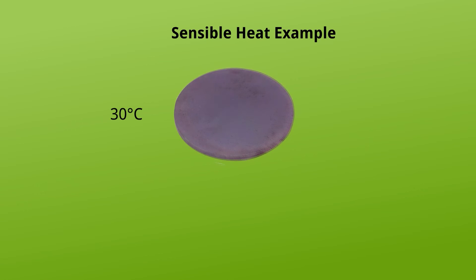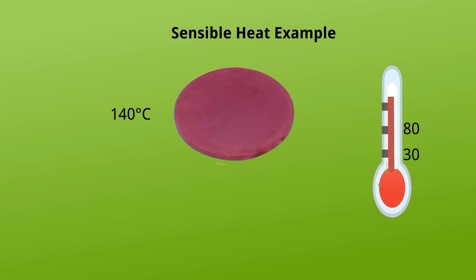Sensible heat example: take a plate of iron at normal temperature, like 30 degrees centigrade. If we heat it, its temperature will increase — say to 80 degrees centigrade — and it can be sensed. If the temperature increases more to 120 or 140 degrees centigrade, it can still be sensed. So when we heat the iron plate, its temperature is increasing, there is no change of phase, and it can be sensed. This is a simple example of sensible heat. In this temperature scale, the temperature changes: 30, then 80, then 150 degrees centigrade.